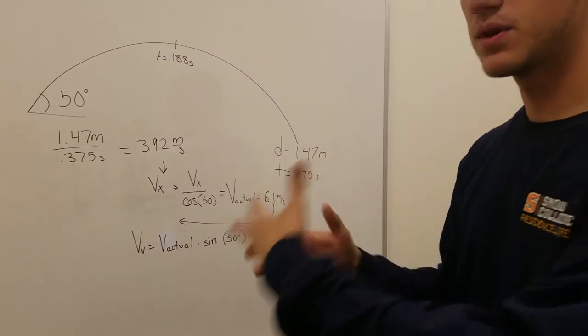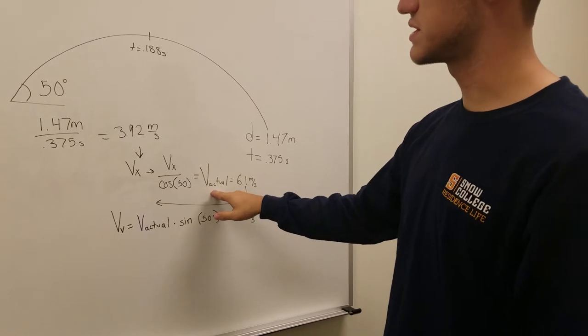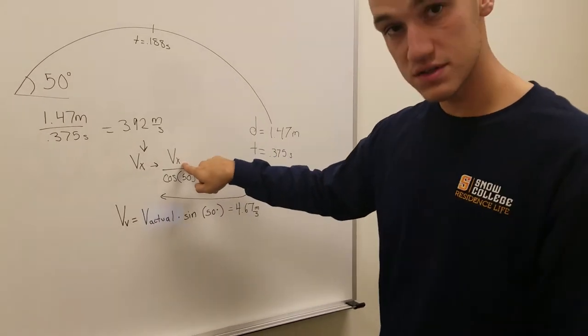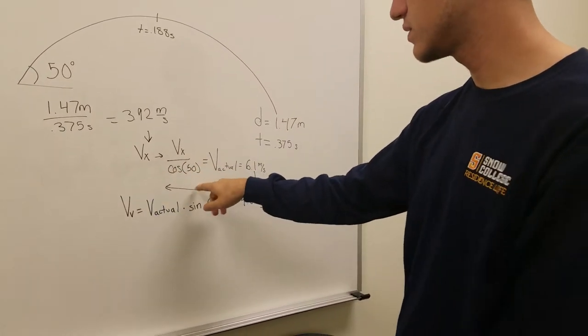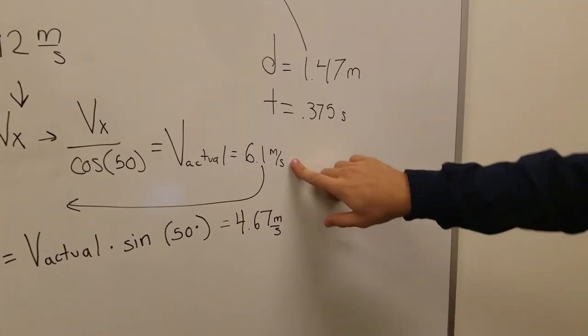We manipulated the equations and figured out that the actual velocity was equal to our horizontal velocity over cosine of 50 degrees, which came out to be 6.1 meters per second, as we can see here.